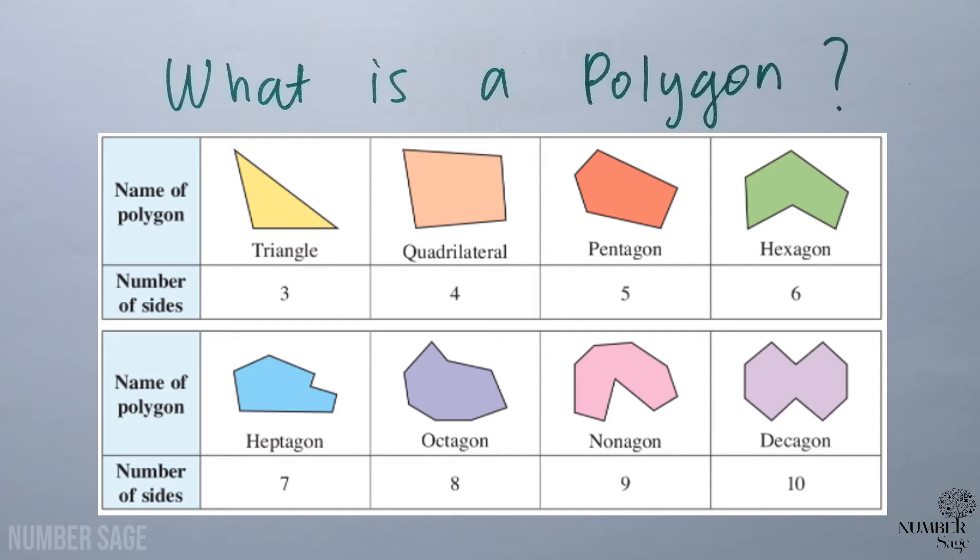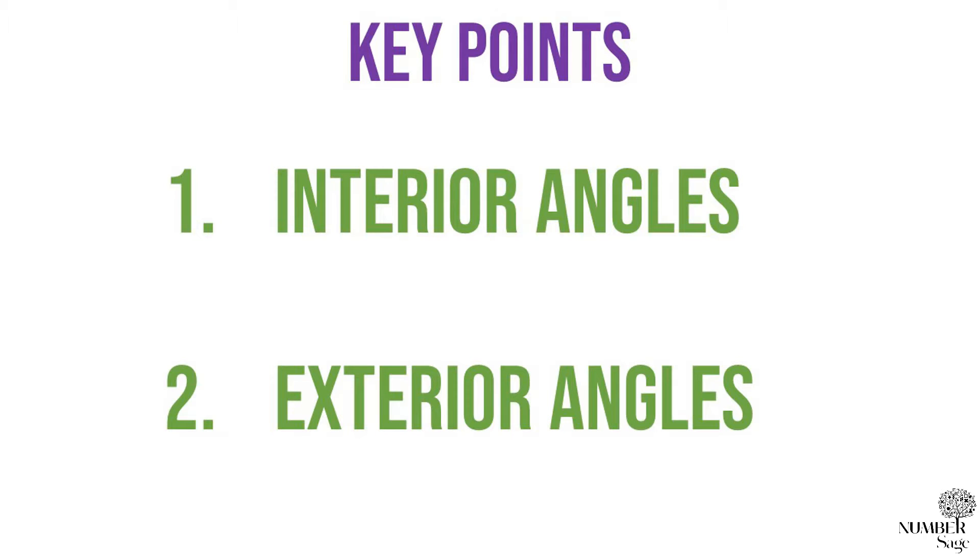Similarly, a quadrilateral has four sides, a pentagon has five sides, a hexagon has six sides, heptagon with seven, octagon with eight, nonagon with nine, and decagon with ten sides. In this chapter there are two important points that you need to know.